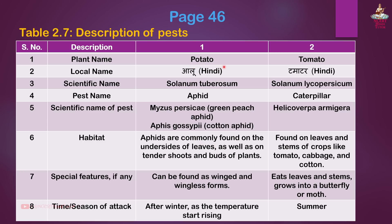Page 46, Table 2.7: Description of pests. First: Plant — Potato. Local name: Alu in Hindi. Scientific name: Solanum tuberosum. Pest name: Aphid. Scientific name of pest: Myzus persicae (Green peach aphid) and Aphis gossypii (Cotton aphid). Habitat: Commonly found on undersides of leaves, tender shoots and buds. Special features: Can be found in winged and wingless forms. Season of attack: After winter as temperatures start rising.